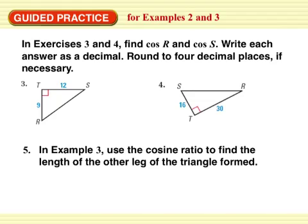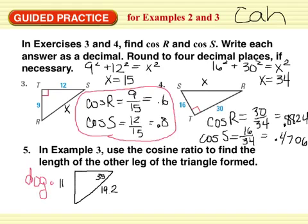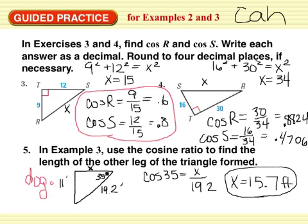Guided practice. In exercises three and four, find cosine R and cosine S. Write each answer as a decimal. Round to four decimal places if necessary. And in number five, in example three, use the cosine ratio to find the length of the other leg of the triangle formed. This would be in the dog run example. Hold up on that one. I will draw the picture here in a minute. Here's the answer to number three and four. And I drew in what we know from example three. Eleven feet, nineteen point two feet, and that angle was thirty-five. So we're trying to find the length of the other leg of the triangle formed. So I'm going to push pause again and finish number five. We have about fifteen point seven feet on that one.